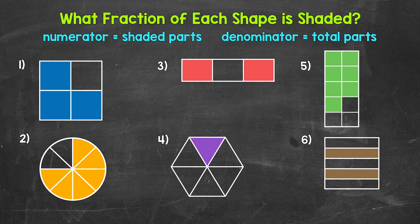So how many equal parts has the whole square been divided into? One, two, three, four. And that's our denominator, so four.